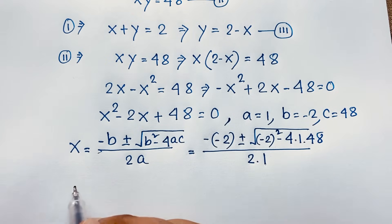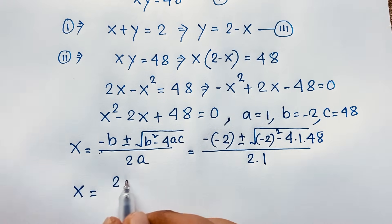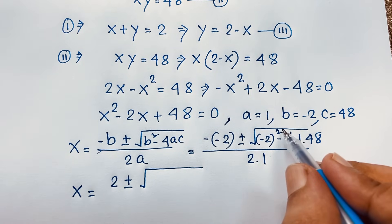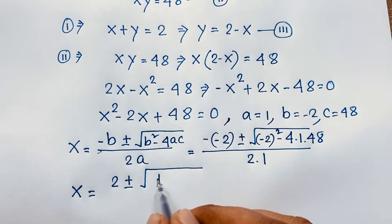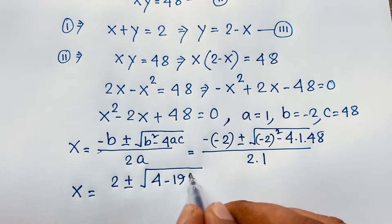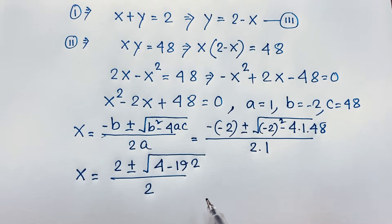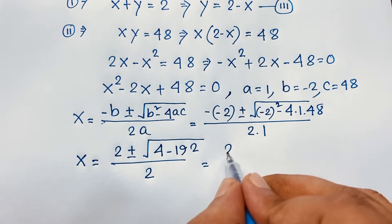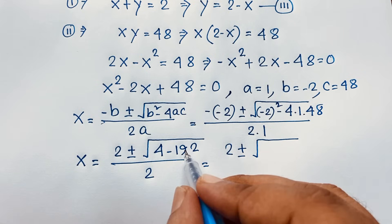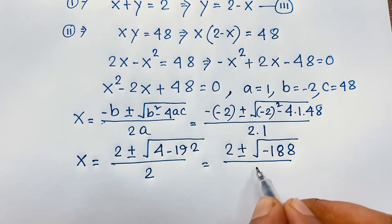Now x will be — negative of negative gives us positive 2 — plus or minus square root of (negative 2 squared minus 4 times 1 times 48). That is 2 plus or minus square root of (4 minus 192), which is 2 plus or minus square root of negative 188, over 2.